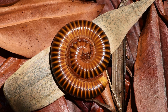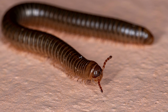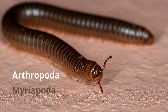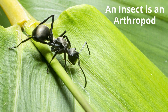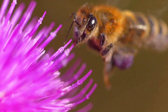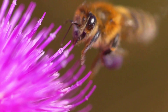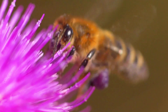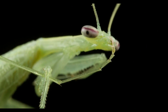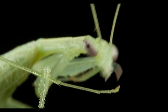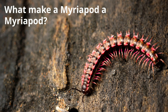A millipede belongs to the phylum Arthropoda and the subphylum Myriapoda. Arthropods are the most abundant category of animals on earth. It is estimated that between 75 to 84% of all animals on earth belong to this category. So, what are some traits of Myriapods?